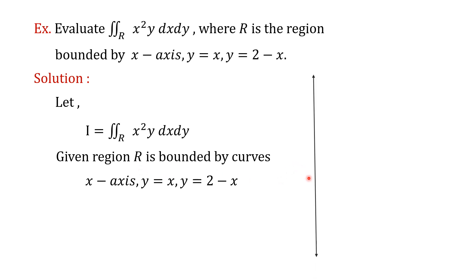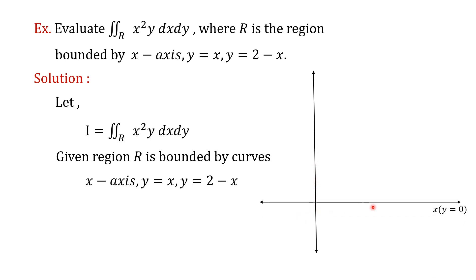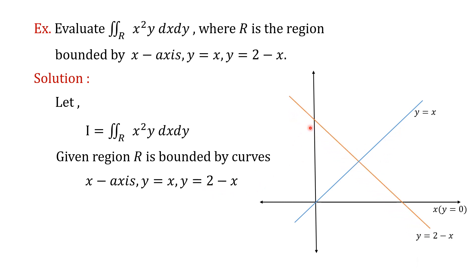Consider this figure. This one is the y-axis, and this one is the x-axis whose equation is y equal to 0. The line y equal to x is the line passing through the origin. Then the next line, y equal to 2 minus x, is also shown. The region is the bounded region enclosed by these curves.